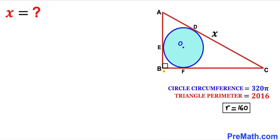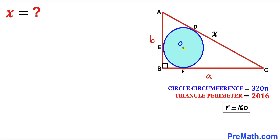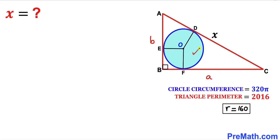Next, let me label side length BC as lowercase a, and side length AB as lowercase b. Now I'm going to connect center O with the points of tangency D, E, and F. As you can see in the diagram, OF, OE, and OD are all radii of the blue circle, and since the radius is 160, all of them are 160 each.